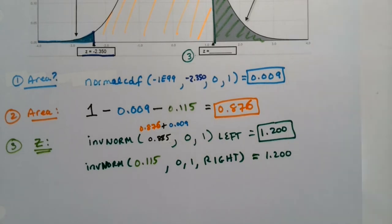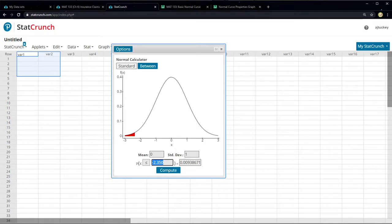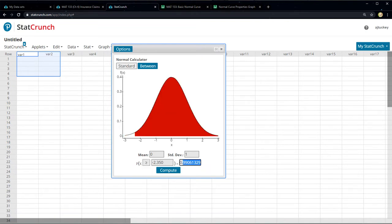Of course, we can avoid this whole mess by using StatCrunch. If I go to StatCrunch and switch to a greater than and say 0.115 enter, there you have it.